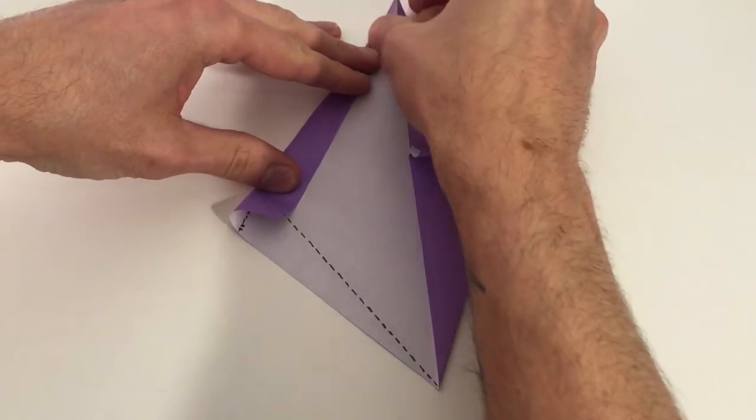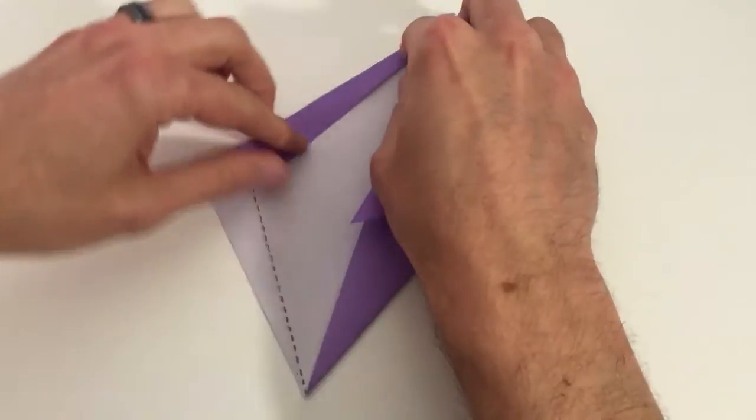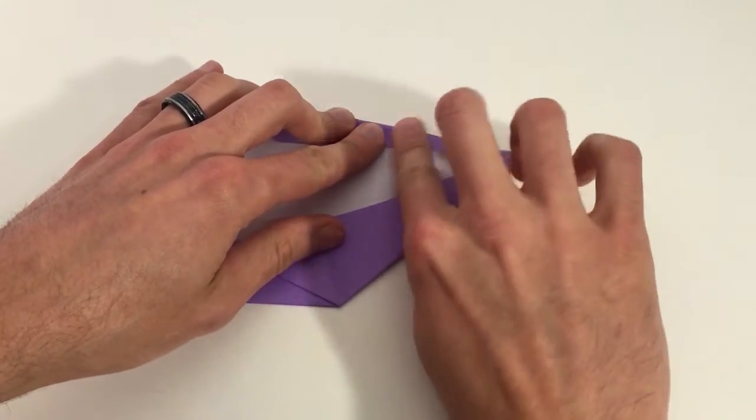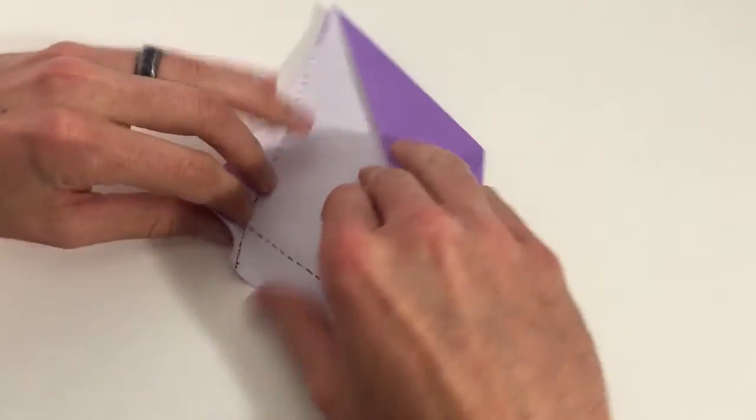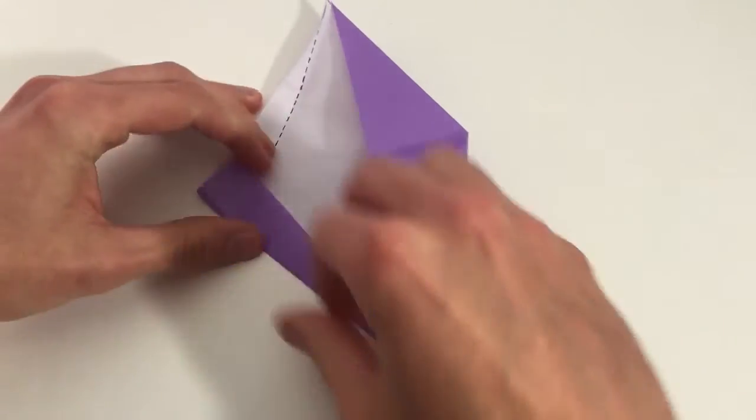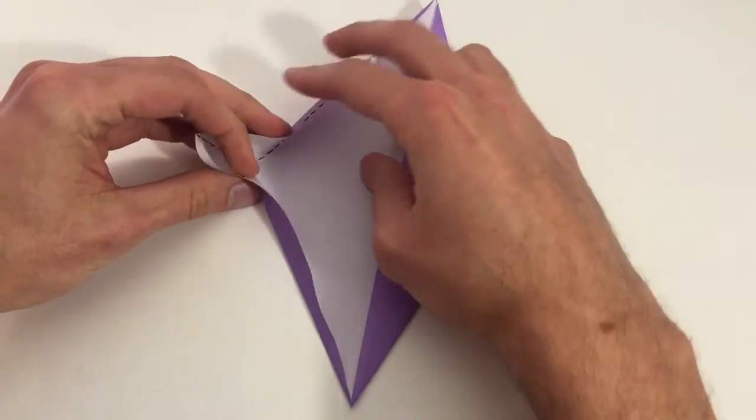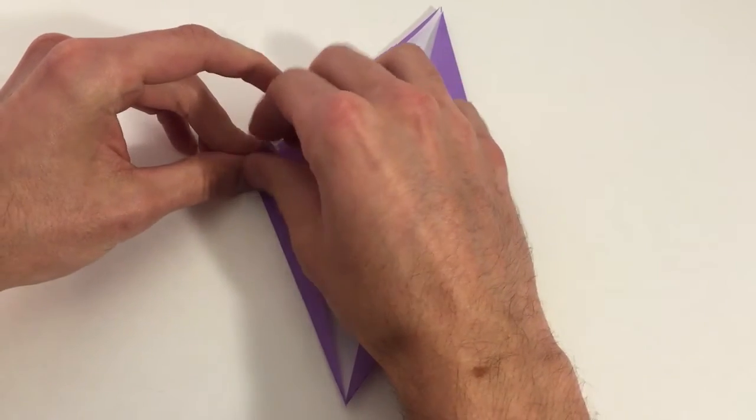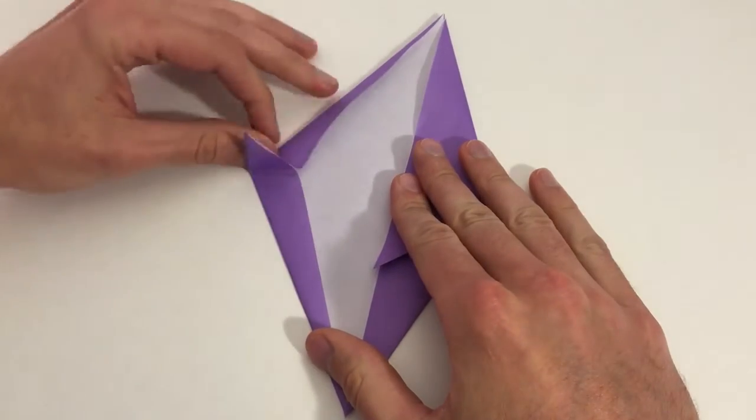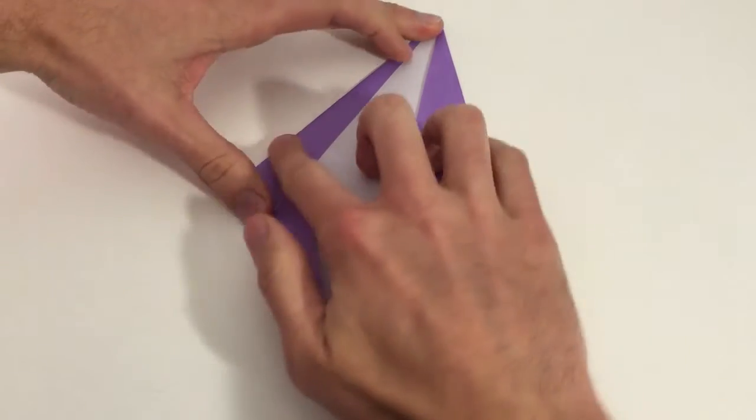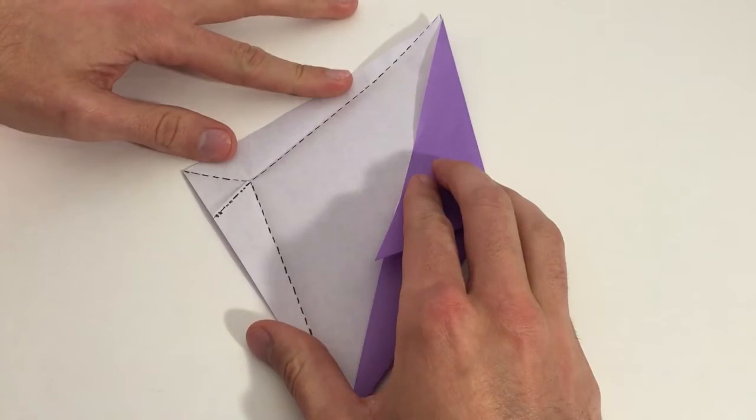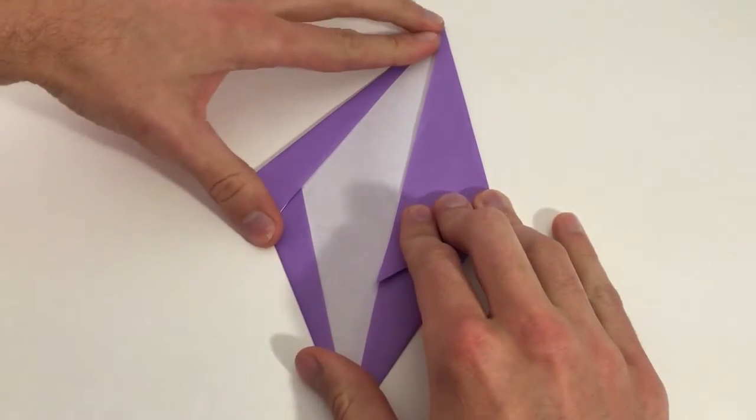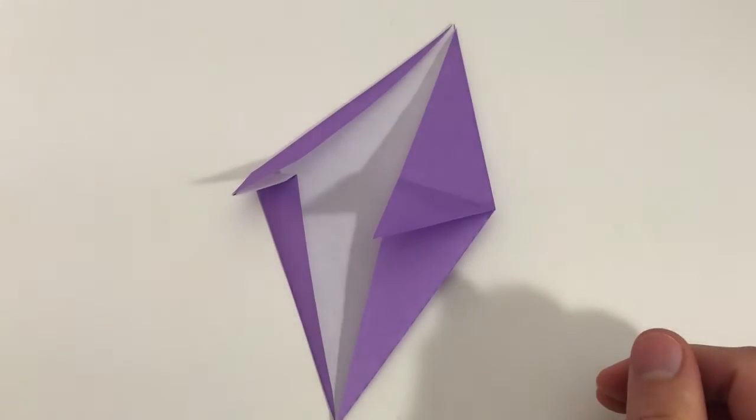Each of the valley folds first, and make all three of the valley folds at once, and push the flap to one side. Then you'll also come across double rabbit ear folds.